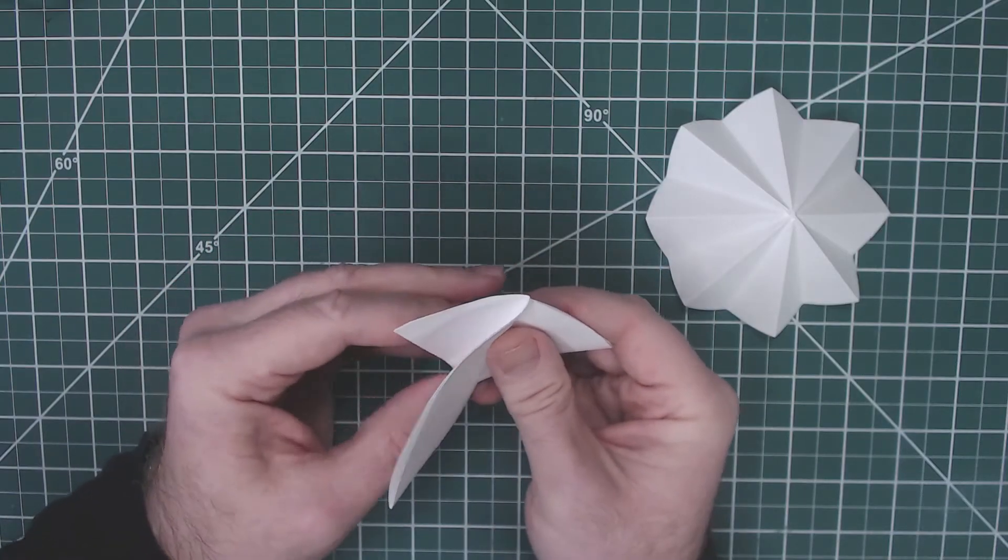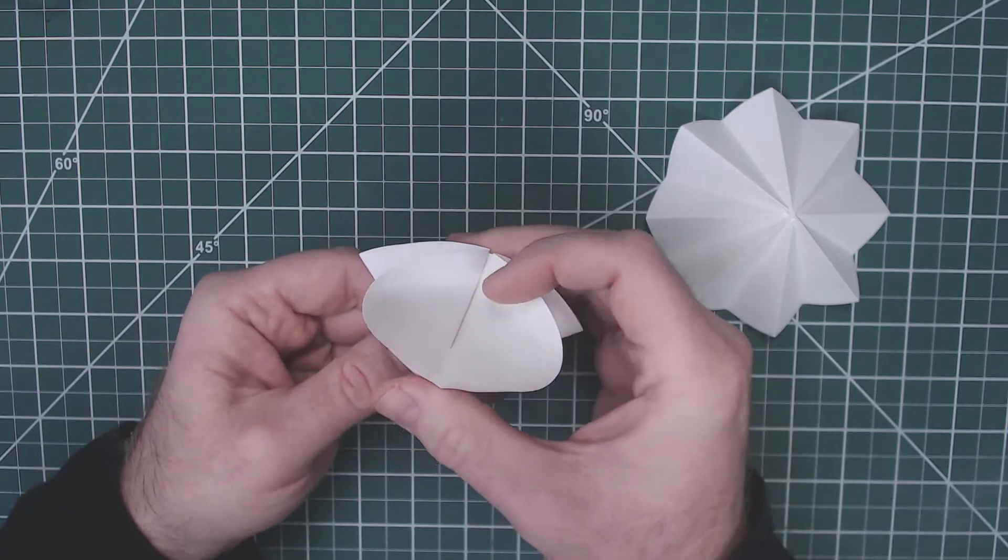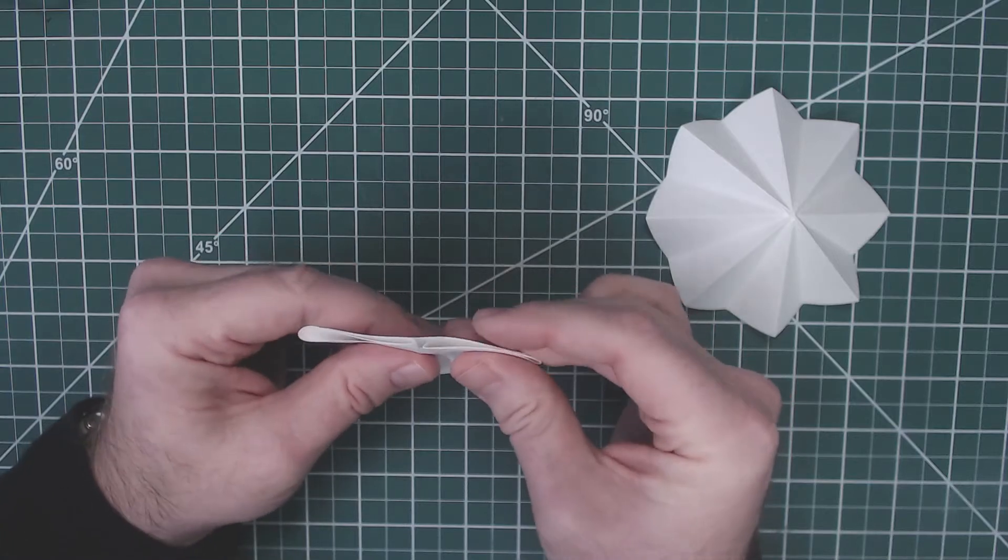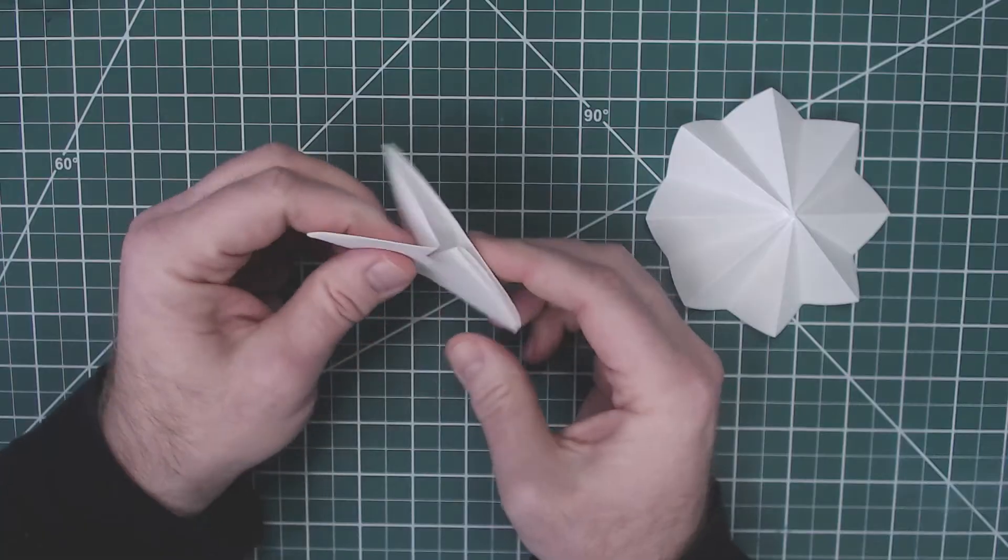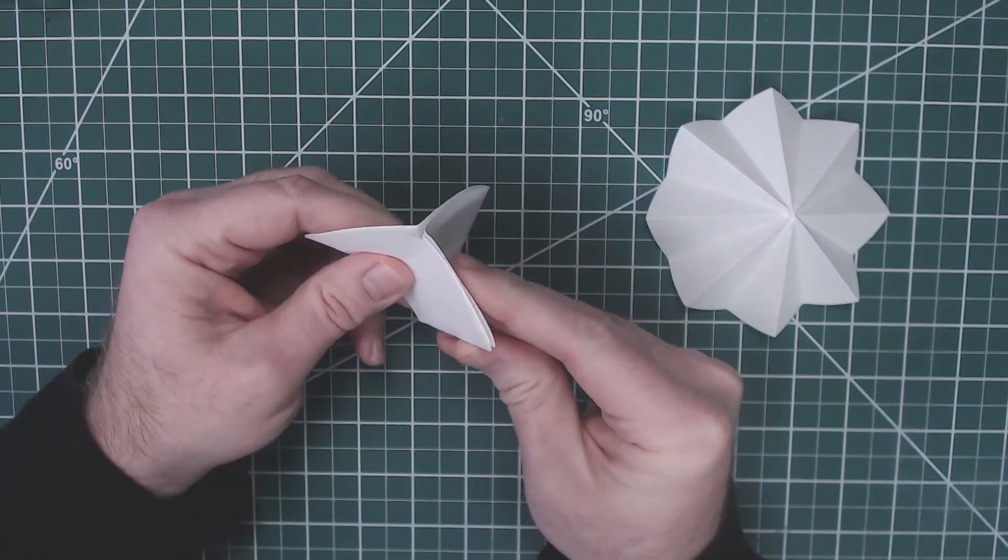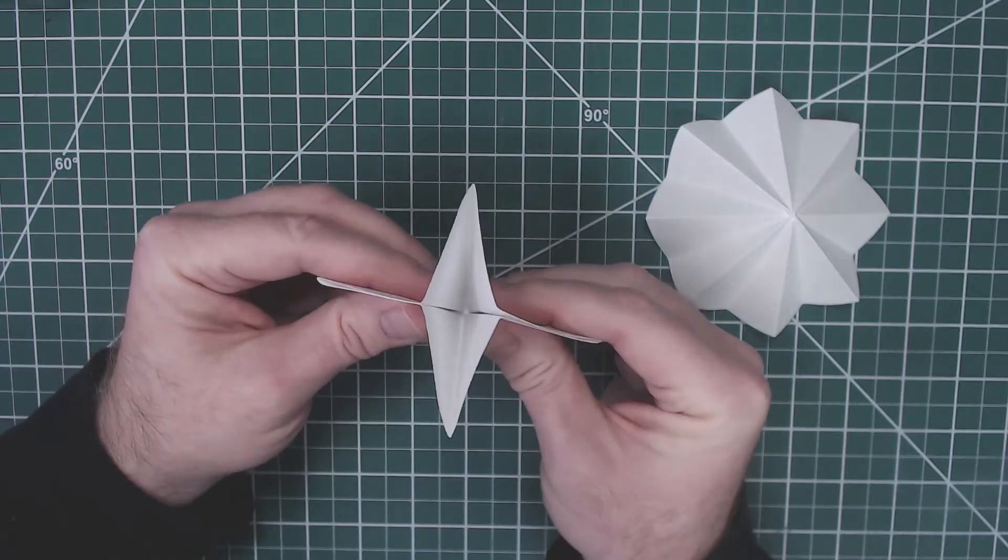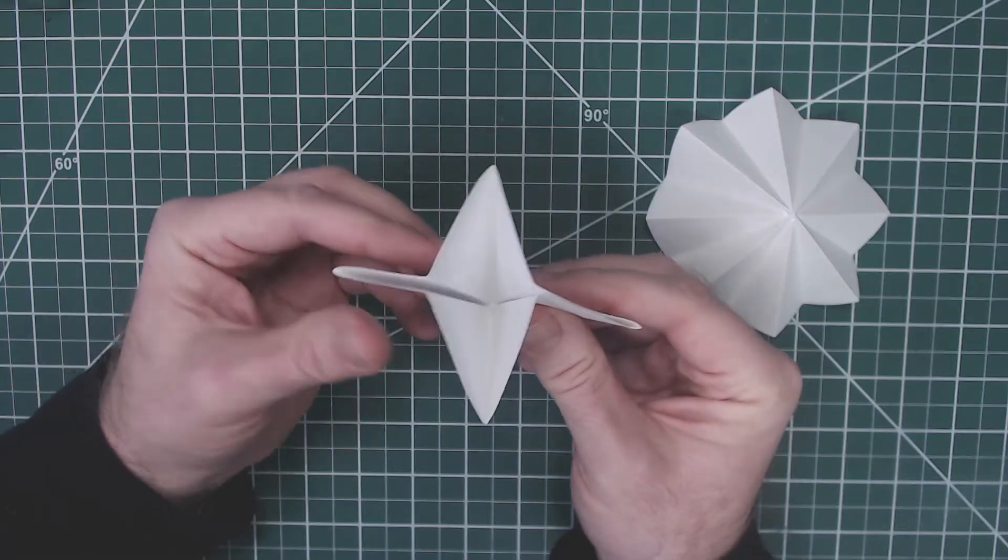The next step is going to be to do the same thing with this side. Line that up with the middle. Now you've got your filter paper that is in quarters. It looks like the old fortune teller game puzzles that you used to do as a kid.